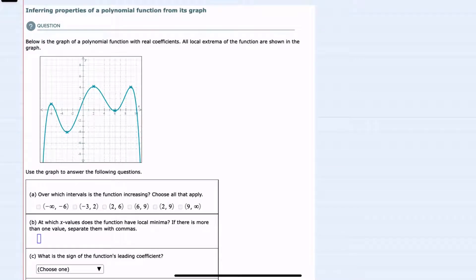In this video I'll be helping you with the Alex problem type called inferring properties of a polynomial function from its graph. We're given the graph of a polynomial here and we're asked a few questions about the graph, with the first being over which interval is the function increasing.